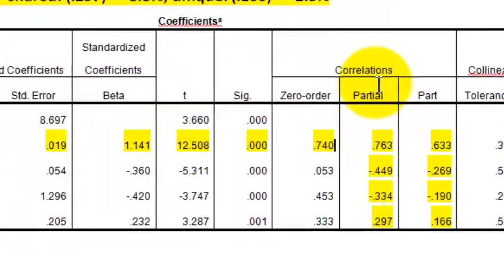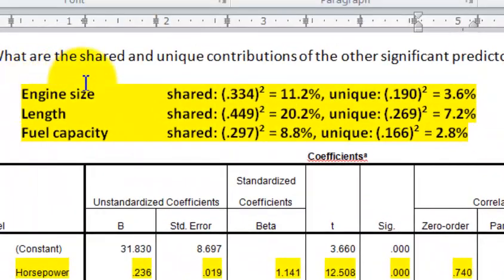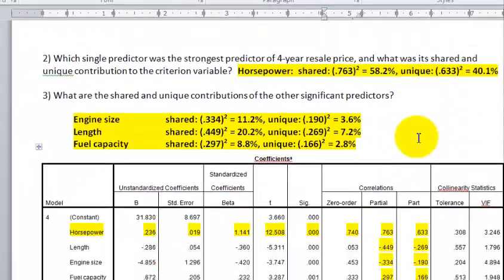So they want the shared and the unique contributions. Remember, so the shared is the partials. So whatever this number is, you have to square it. And whatever the part is, that's the unique contribution. You have to square that. So we did that for all three, for engine size, length, and fuel capacity. So there's their shared contributions to the DV and their unique contributions to the DV. And I think I forgot to do that for the number two. But for horsepower, again, you simply take the partial correlation and you square it. That gives you the shared contribution, which means that it's using these other variables with its controlling the DV. And the unique means all the other variables have been controlled for. They've been pulled out. So that's what this is. And again, there's number three.